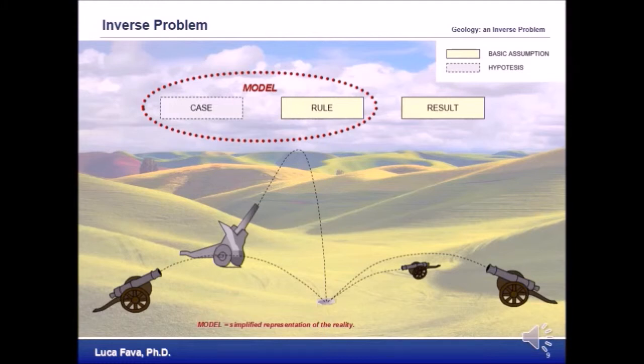Different combinations of the parameters defined in the initial condition can explain the result. We have different models that fit with the data. This is what the mathematicians call the non-uniqueness of the solution. So the scope of a geologist is to find remnants of the initial condition and new data in order to discriminate between the possible solutions, even if sometimes it is not possible at all.